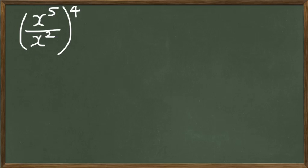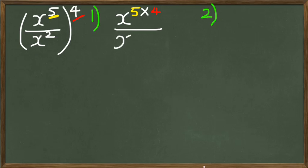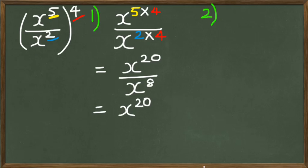There are actually two ways of solving this. The first method is multiplying the powers. So when we have x to the power of 5, we multiply 5 by 4, and that's divided by x to the power of 2 multiplied by 4. This gives us x to the power of 20 divided by x to the power of 8. That's simply x to the power of 20 minus 8, and the final answer is x to the power of 12.